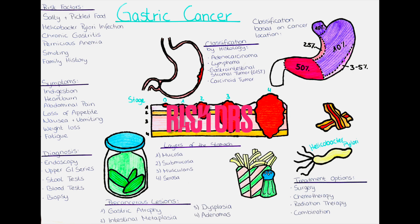What are the risk factors to develop gastric cancer? The exact cause of gastric cancer is not known, but several factors have been identified as risk factors for its development. These include a diet high in salted, smoked and pickled foods, a history of Helicobacter pylori infection, chronic gastritis, pernicious anemia, smoking and a family history of gastric cancer.